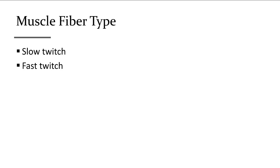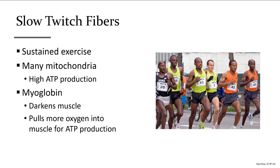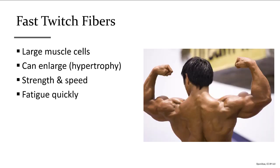We have two main types of fibers: slow twitch and fast twitch. Slow twitch fibers are for sustained exercise — they have lots of mitochondria churning out energy for a long time, like for marathon runners. They contain myoglobin, a protein inside the cell that makes it darker. Myoglobin pulls extra oxygen out of the blood into the muscle, allowing more ATP production through the mitochondria.